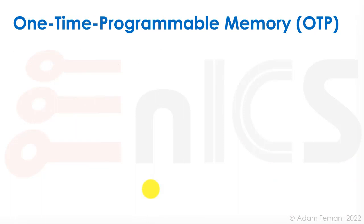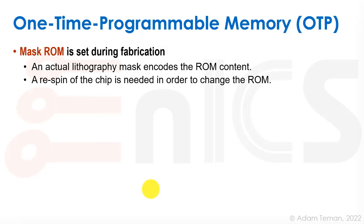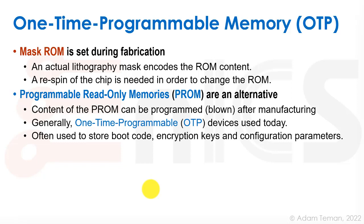Another case is a one-time programmable memory, which is something that is found often in today's design. So mask ROM is set during fabrication. We have to actually go and make another tape out or a re-spin, a metal fix type of a thing, in order to get a new version with a newly programmed ROM. So we need an actual lithography mask that encodes the ROM content, and we need a re-spin of the chip. However, we can use instead of that something like a PROM, a programmable read-only memory. The content can be programmed, which we often call it blown, because usually it's a fuse that we're blowing out, and that can be done after manufacturing. So generally, one-time programmable devices are used today, and they're used to store boot code, encryption keys, configuration parameters, et cetera.